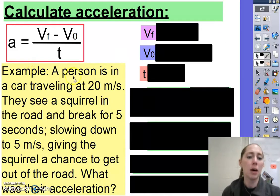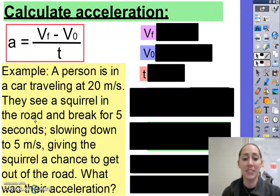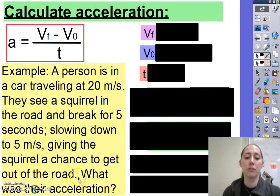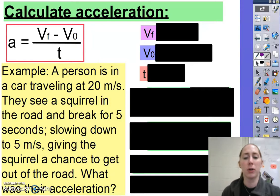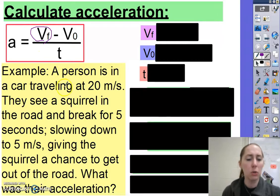Example: A person is in a car traveling at 20 meters per second. They see a squirrel in the road and they brake for five seconds, slowing down to five meters per second, giving the squirrel a chance to get out of the road. What was their acceleration? Whenever you have a word problem like this, I like to underline the various parts. In our equation, we need the final velocity — what did they do last? They were going five meters per second last.